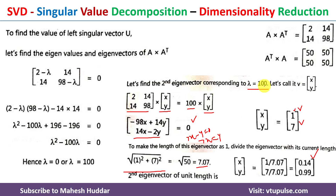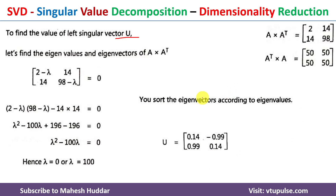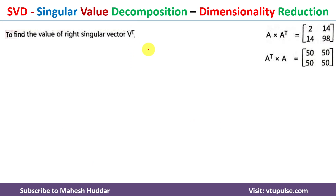Now we write the matrix U. We sort the eigenvectors in descending order of their eigenvalues. The eigenvector corresponding to λ = 100 (the largest) goes in the first column, and the eigenvector for λ = 0 goes in the second column. With this procedure we have calculated the left singular vector U.